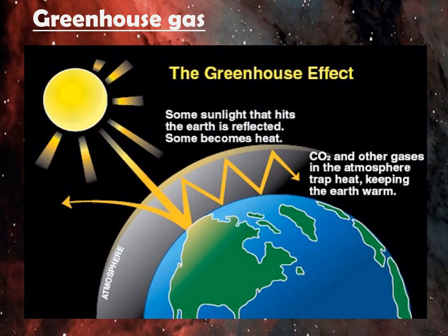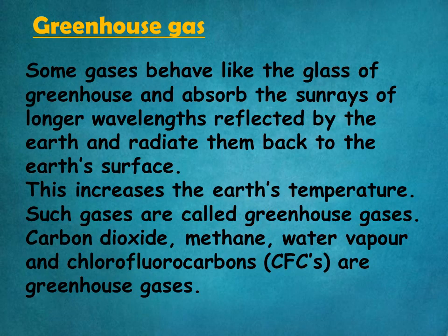The earth's atmosphere produces an effect similar to a glass house or greenhouse, called the greenhouse effect. Some gases behave like the glass of a greenhouse and absorb the sun's rays of longer wavelengths reflected by the earth, then radiate them back to the earth's surface, increasing the earth's temperature. Such gases are called greenhouse gases. Carbon dioxide, methane, water vapour, and chlorofluorocarbons are greenhouse gases.